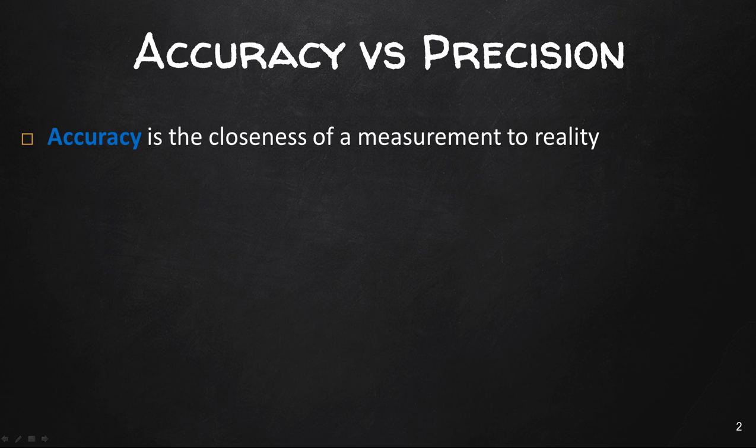Accuracy is the closeness of a measurement to reality. For example, horizontal accuracy is of more interest than vertical accuracy, which is the altitude, for cadastral mapping or surveying.